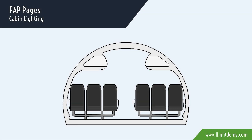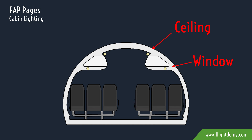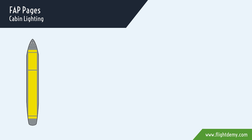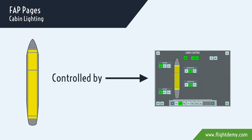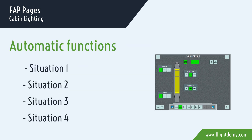The general illumination system has different light strips which are located in the ceiling panels above the aisles and windows. Every light strip consists of a row of fluorescent tubes which are integrated in ballast units. The illumination in the different areas is controlled by the cabin illumination function. The system illuminates the entry areas and cabin zones.